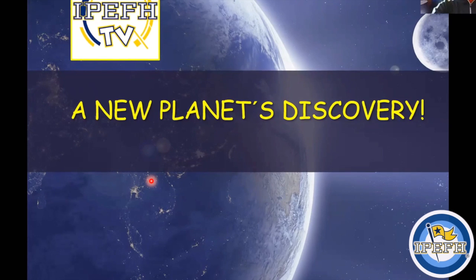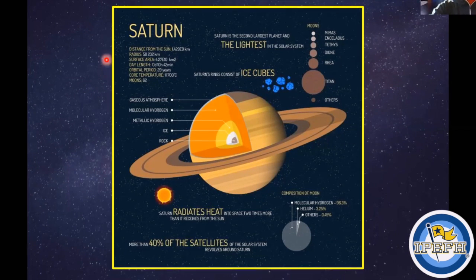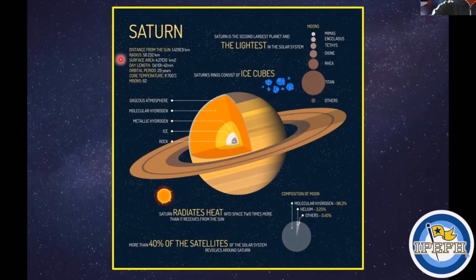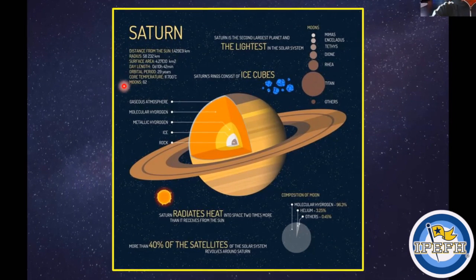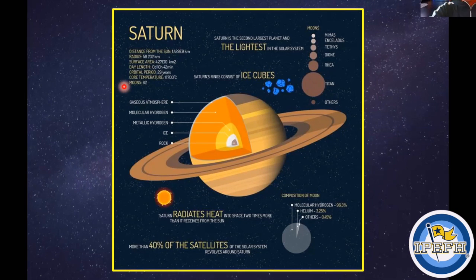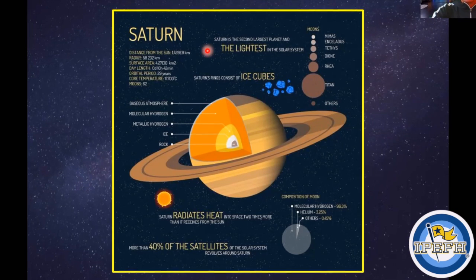Here we have a planet's infographic. In this case, it is about Saturn. And we have relevant and important information such as the distance from the Sun, the radius, the surface area, the day length, the orbital period, the core temperature, and how many moons Saturn has. Also, we have some information about this planet. Saturn is the second largest planet and the largest in the solar system.